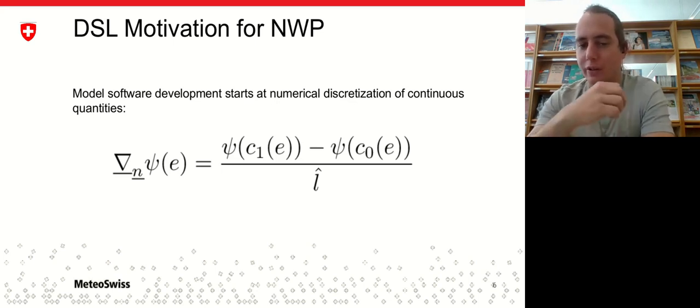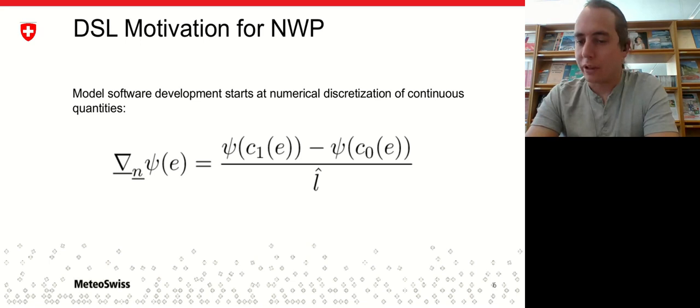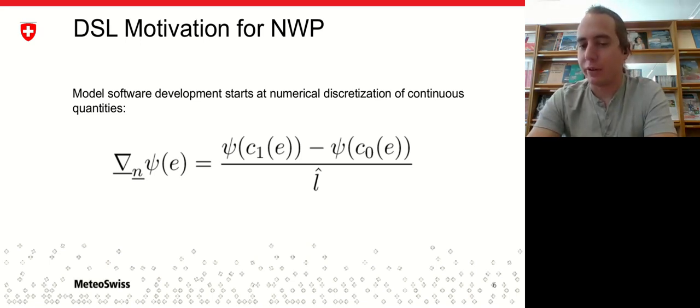A natural question to ask is, what is the purpose of domain-specific languages in the NWP context? To answer this, I would like to do a more extensive worked example. Imagine that you would be a climate scientist and you would like to develop a weather or climate model. At some point, sooner or later, you will be required to implement a gradient.